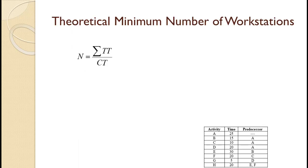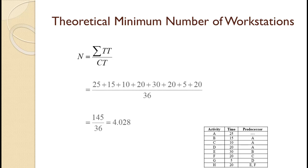The theoretical minimum number of workstations is calculated as the sum of the task times divided by the cycle time. For this example, the sum of the task times is 145 and the cycle time is 36, which works out to 4.028. Since you cannot have a fractional workstation, you always round this number up. So the theoretical minimum number of workstations we need for this example is 5. There is no guarantee that we can do the problem with just 5 workstations — all we know is that it will take at least 5.